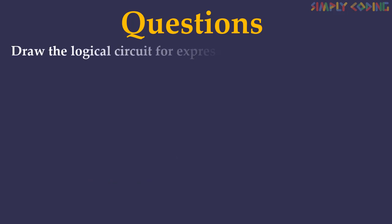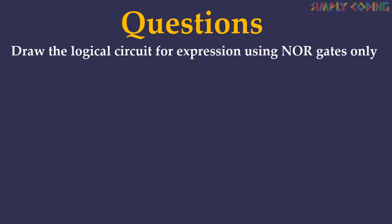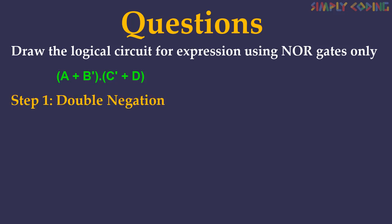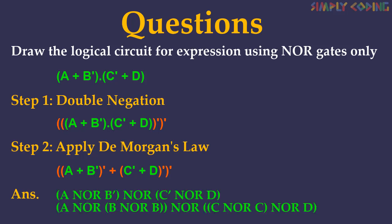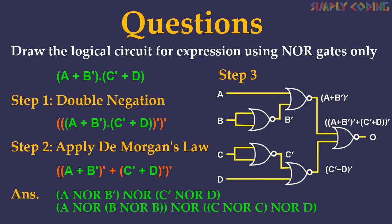Now if the expression is given in POS form and you are asked to use only NOR gates, the steps remain the same. Suppose the boolean expression is (a + b bar) · (c bar + d). Step 1: apply double negation. Step 2: apply De Morgan's law to the innermost bracket — this gives us the expression in NOR format. We can now write the expression in NOR form and draw the logic diagram for it.